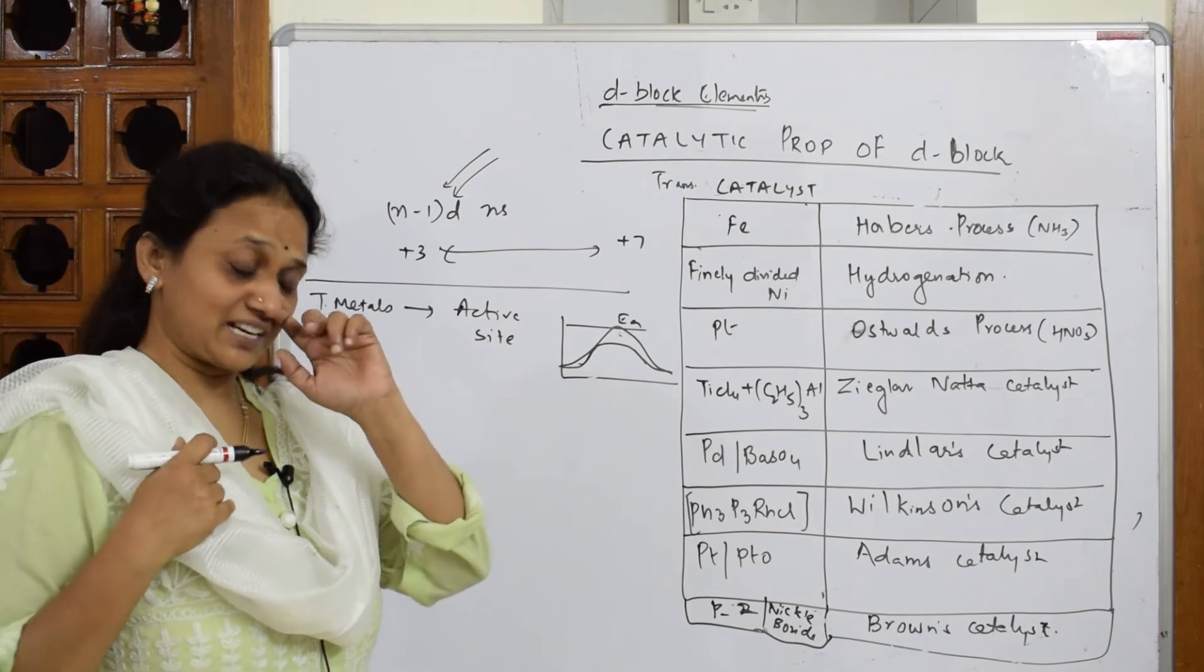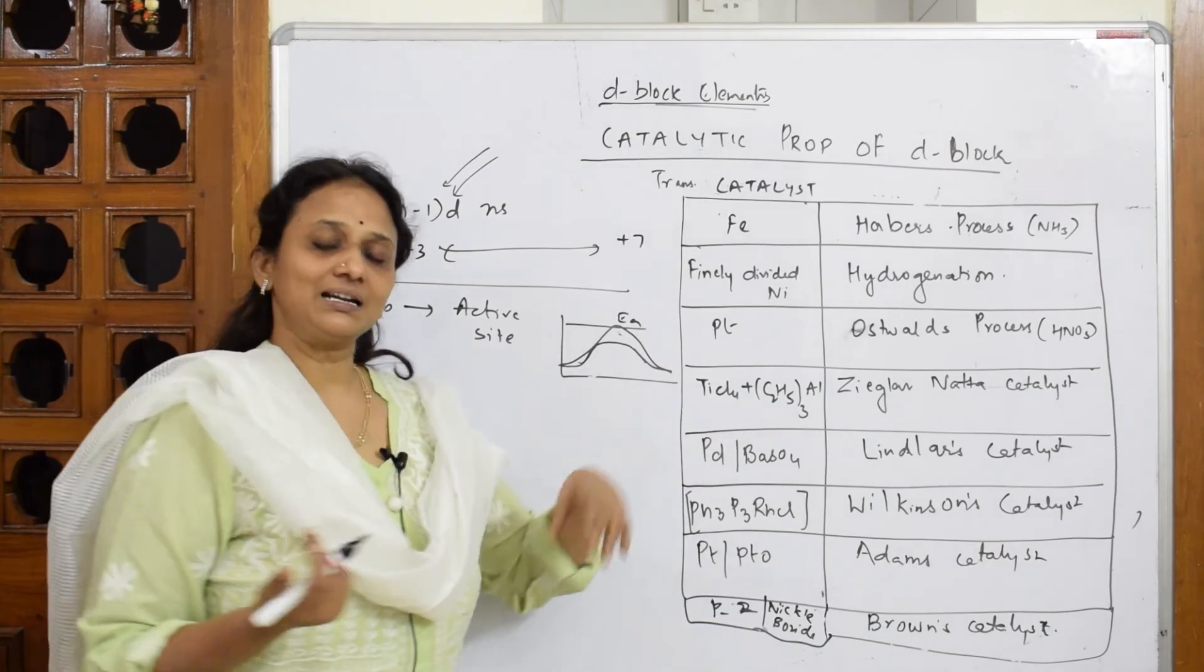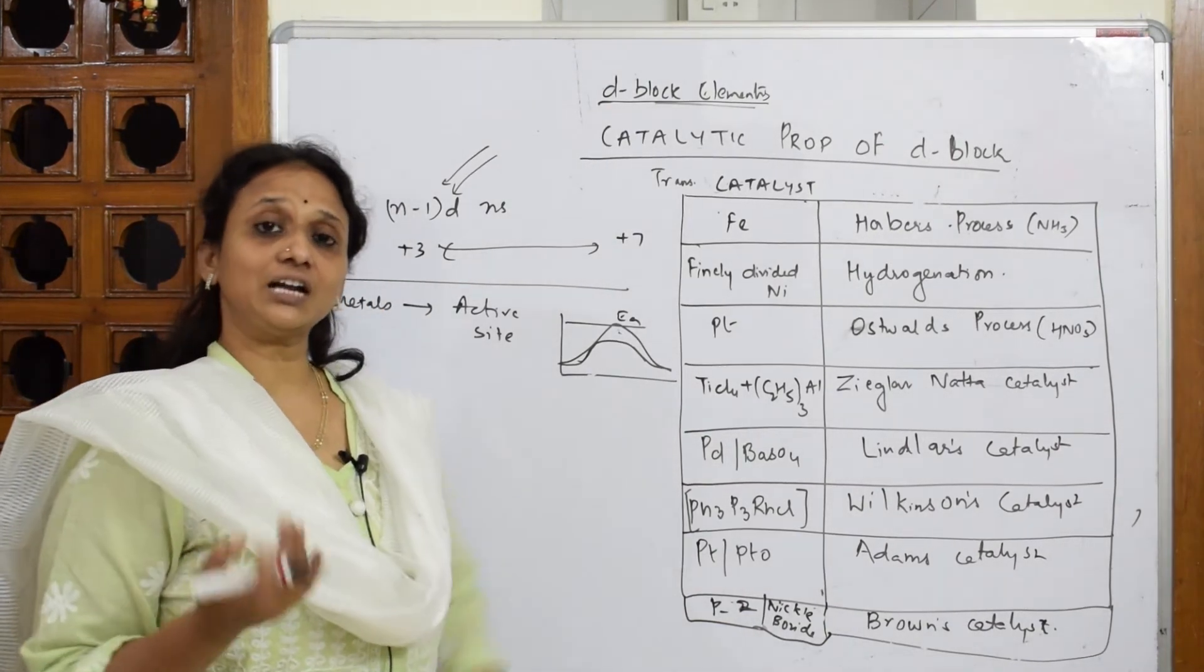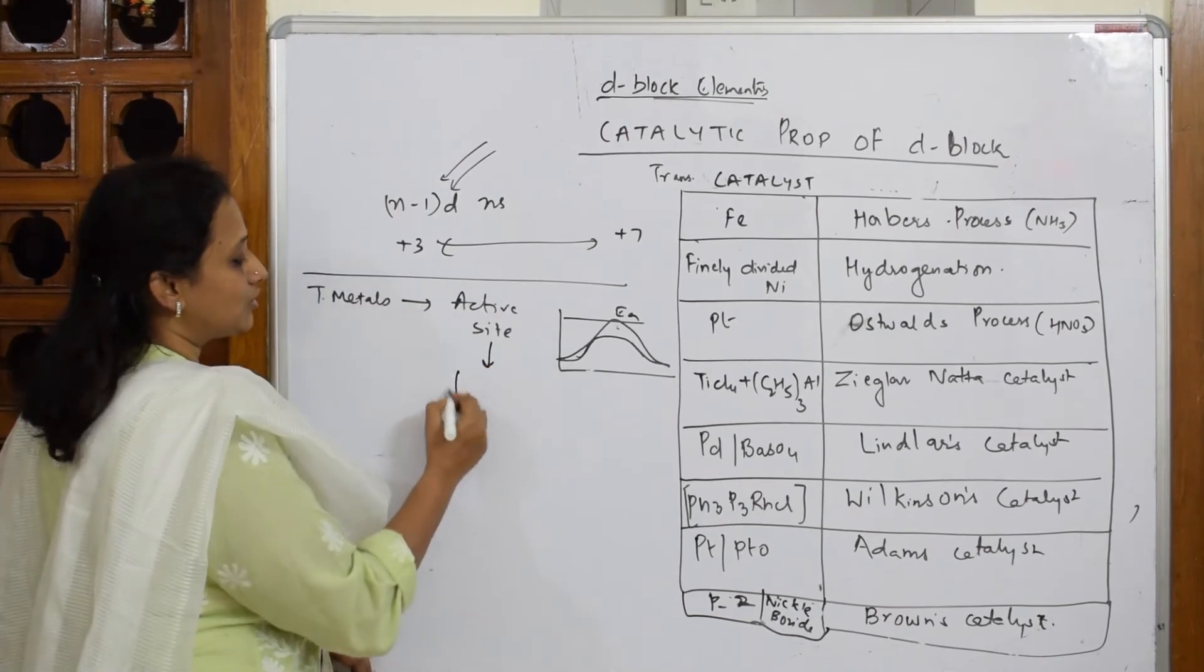When they fix into active sites, that is indirectly the catalyst, these transition metals. Once these other metal atoms come and fix, the activity of that catalyst will become so high that it immediately tries to form a complex.